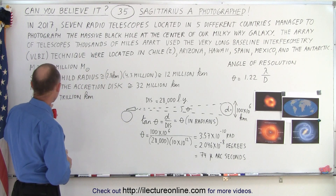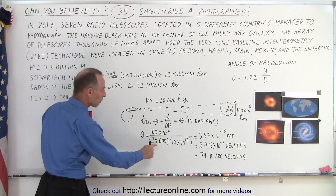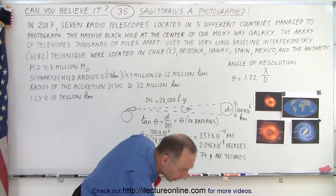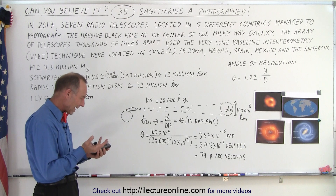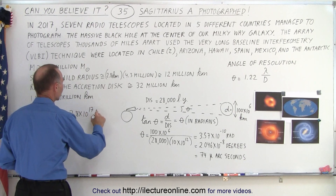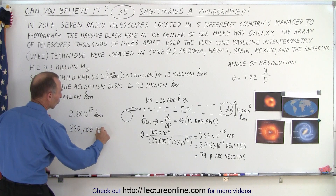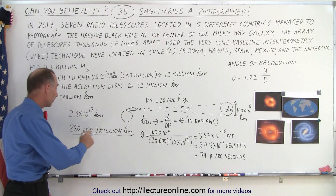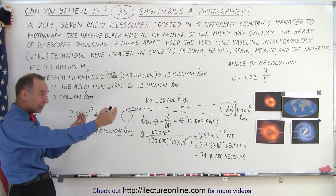I did another quick calculation: a light year is about 10 trillion kilometers, and the distance is 28,000 light years. Multiplying those together — 10 to the 12th times 28,000 — gives us 2.8 times 10 to the 17th kilometers, or 280,000 trillion kilometers. That's an enormous distance; that black hole is 280,000 trillion kilometers away.